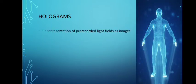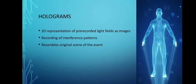What are holograms? They are 3D representations of pre-recorded light fields. It is a real world recording of interference patterns. It uses diffraction to reproduce a 3D light field, resulting in an image which still has depth, parallax and other properties of the original scene. It helps in viewing the image at different angles.